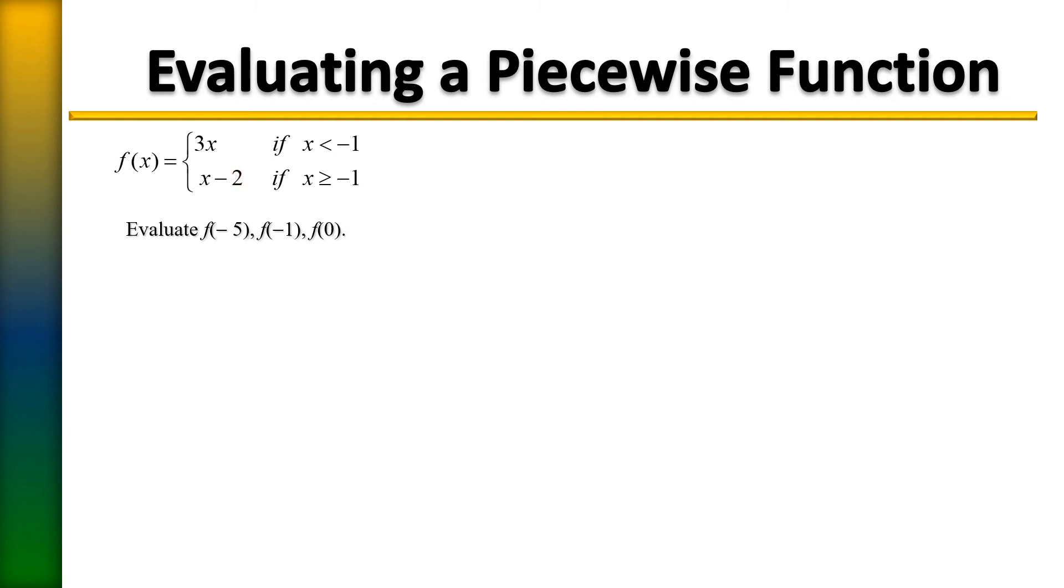So that is how it works. It's based on the rule. We want to first evaluate f of negative five. Would you say that negative five is less than negative one or is negative five greater than negative one?